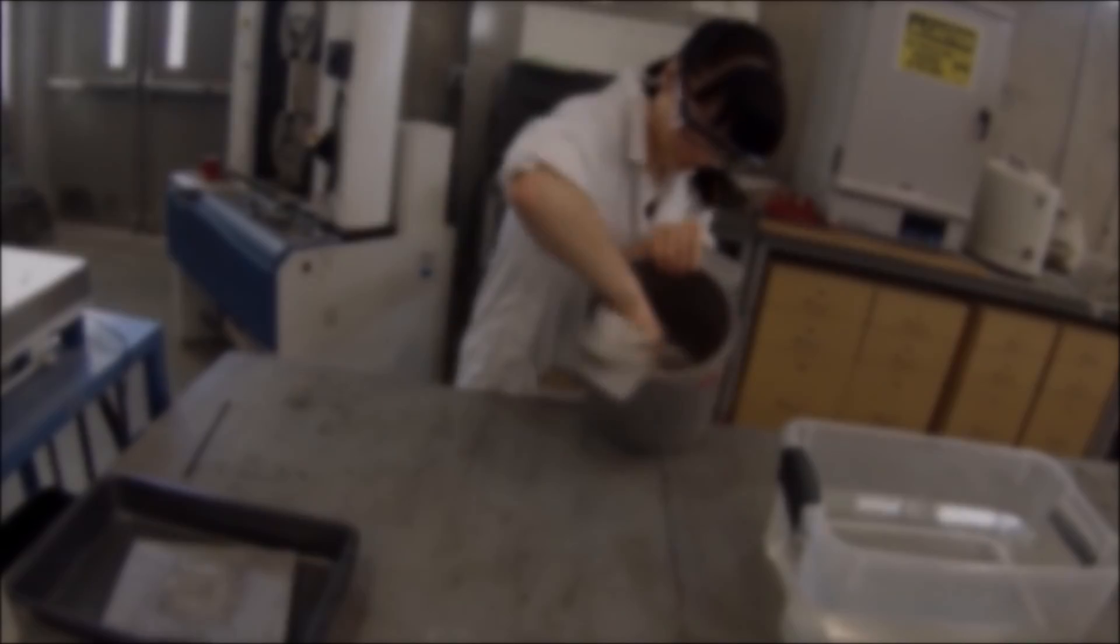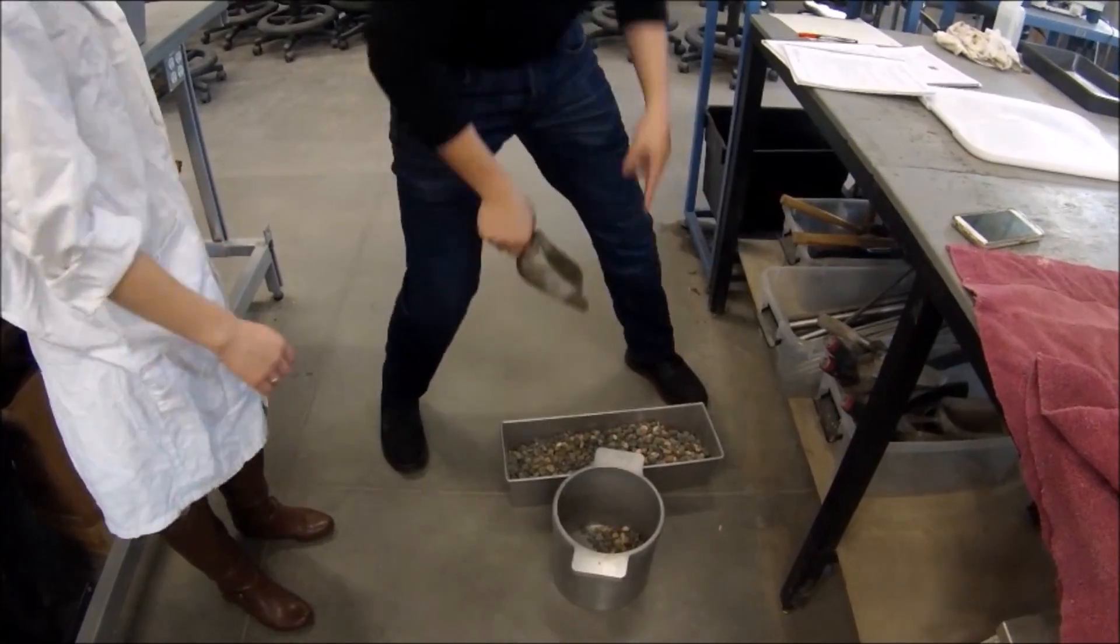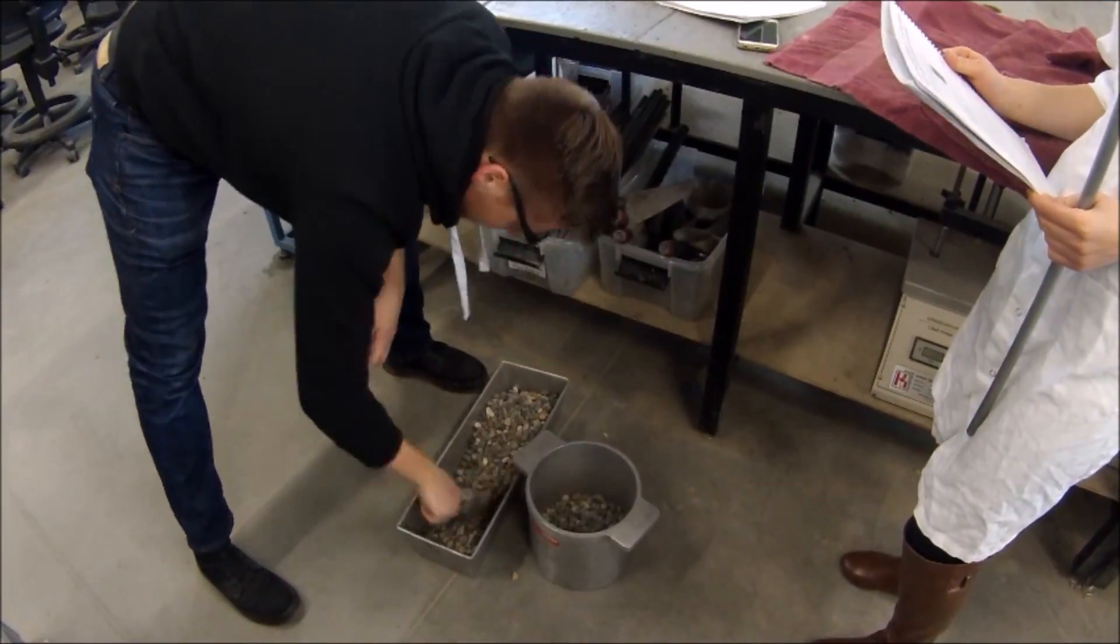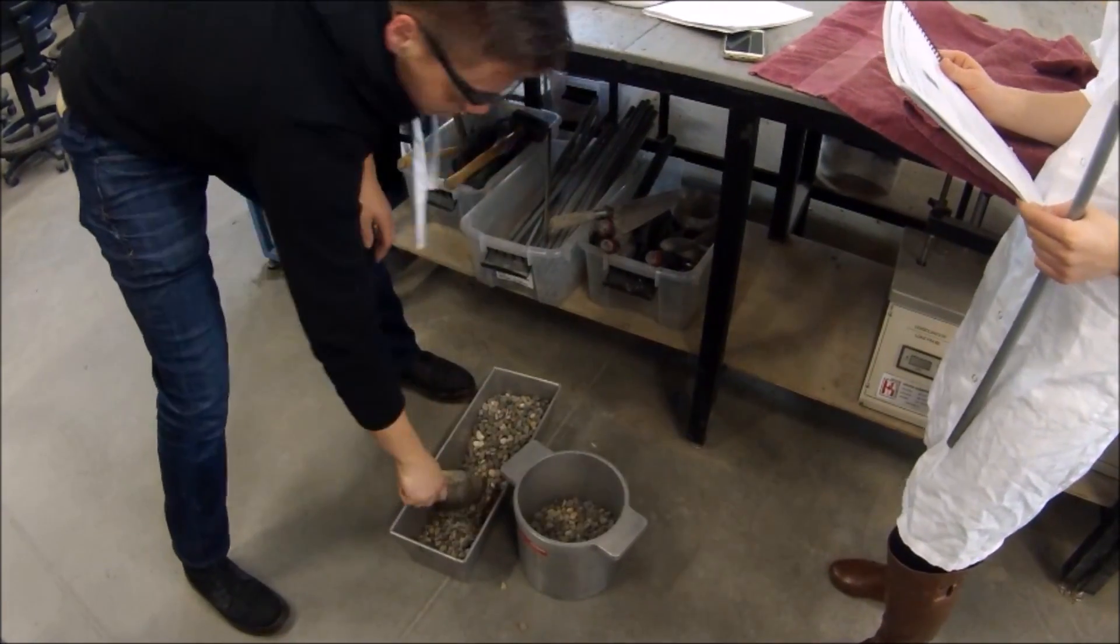Carefully pour the water out of the measure and completely dry it with a towel. Place the cylindrical measure on the ground and fill it one-third of the way full with the aggregate and level the surface with your fingers.